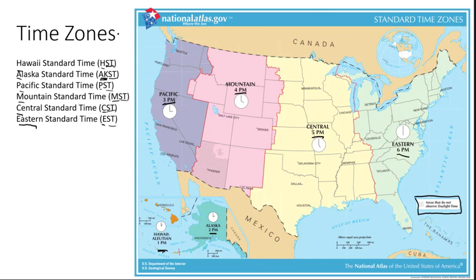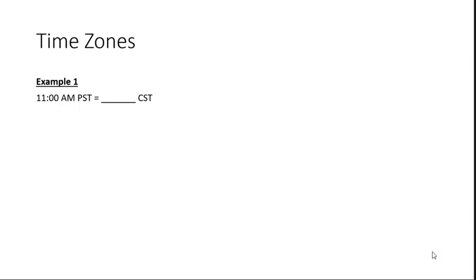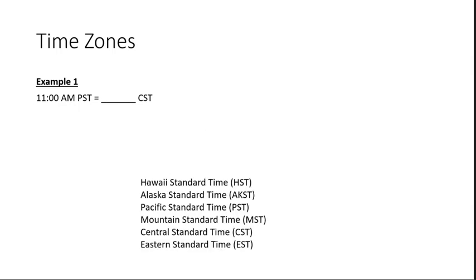Now we'll convert between time zones. Example one: 11 a.m. Pacific Standard Time — what time is it in Central Standard Time? With the list ordered from west to east, we count the number of time zones between Pacific and Central, which is two. Since we're moving east, we add two hours. 11 a.m. plus two hours gives us 1 p.m. Central Standard Time.